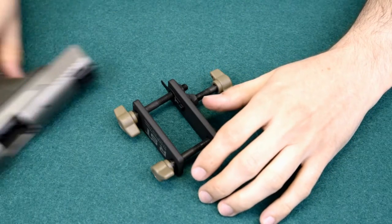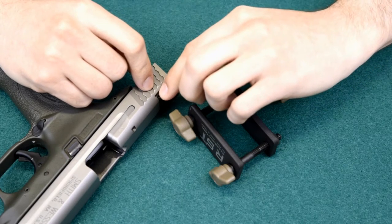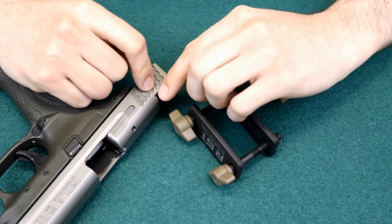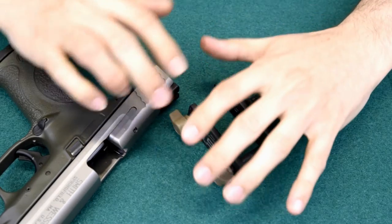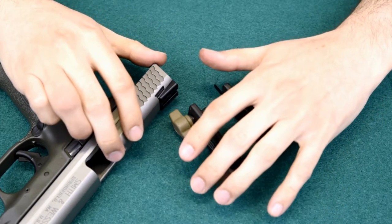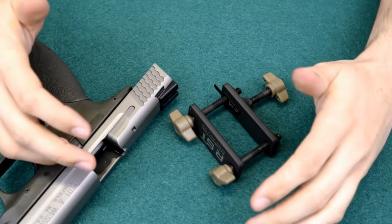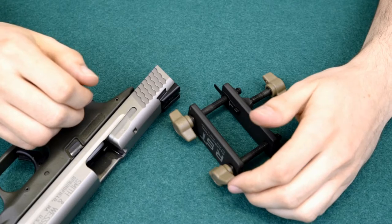Also it's very important to place lubrication on the dovetail of the sight that you want to move to ease the job. Also, before heading to the range, it is highly recommended that you try this tool at home with your guns so you don't find unexpected problems after the trip to the range.